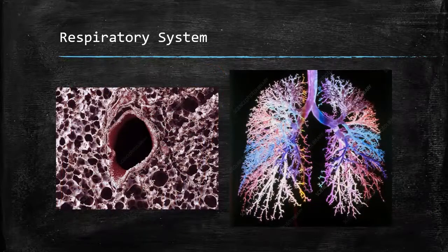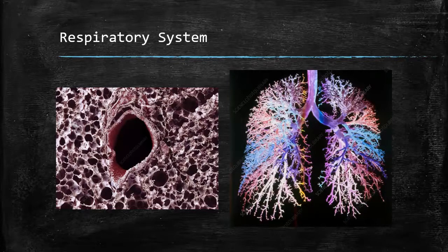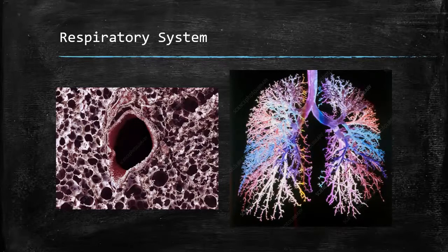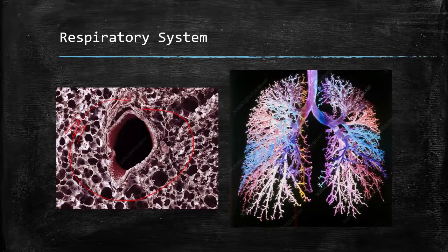These two pictures are probably my favorite pictures of the respiratory system because they really help you understand the lung tissue and the internal structures of the different passages into the lung. On the left-hand side is a blown-up picture of actual lung tissue. There's a big hole in the center — that's actually going to be a bronchiole, which is bringing the air into that tissue. All the other little holes around it are the alveoli — the air-filled sacs.